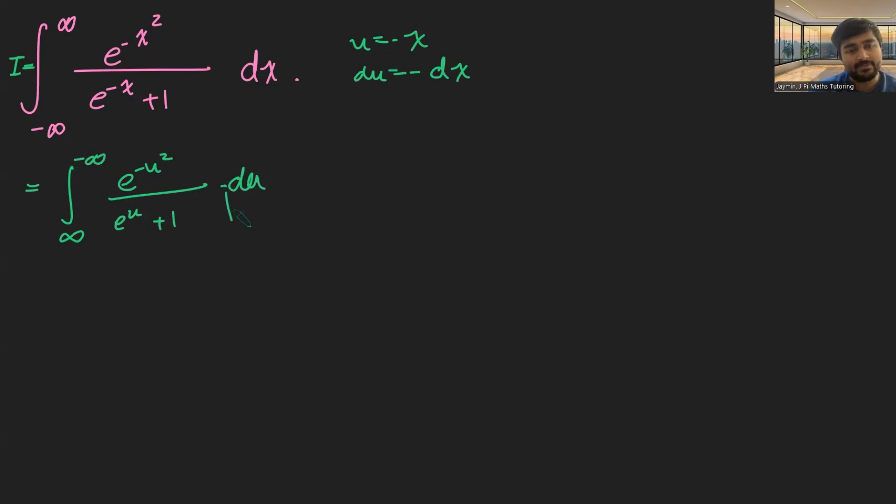But what's quite nice is I can use this negative sign here to swap the limits around. So this is actually just the same as integral from minus infinity to infinity of e to the minus u squared over e to the u plus 1 du.